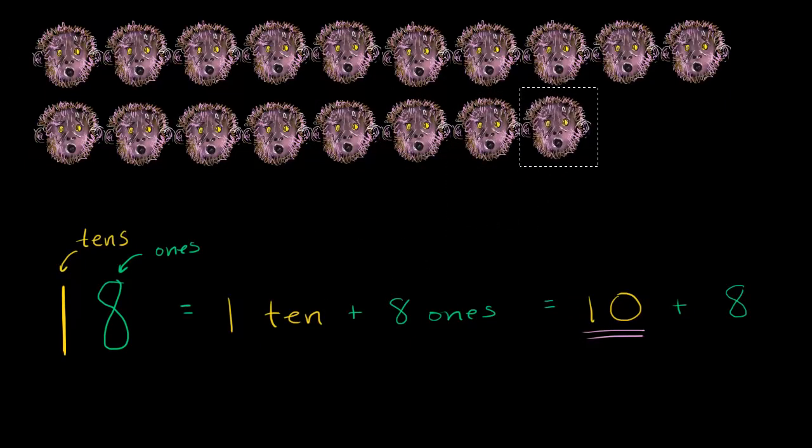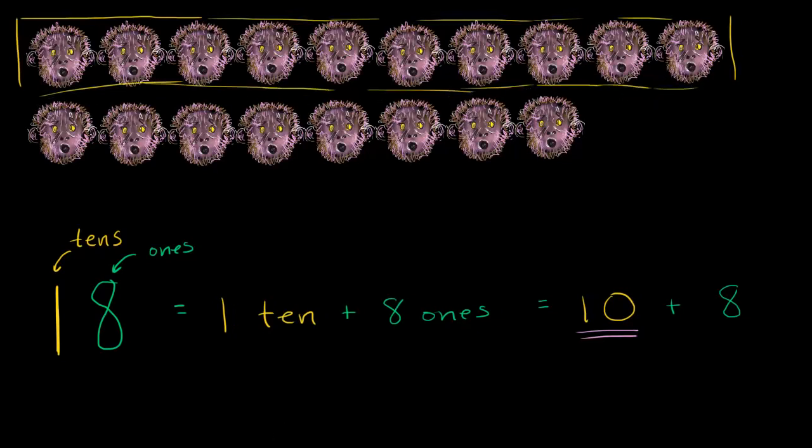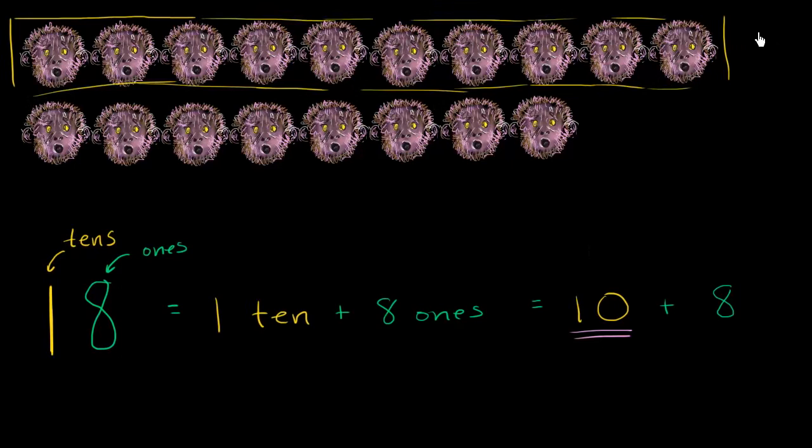So how many more did we add? Well, once again, we started with this 10 right over here. Let me box them off. We started with these 10 monkeys. So that's one group of 10 right over there. So we started with the 10. And then we added 8 more monkeys. 1, 2, 3, 4, 5, 6, 7, 8.